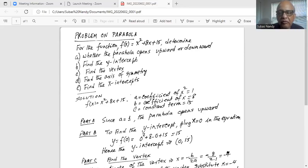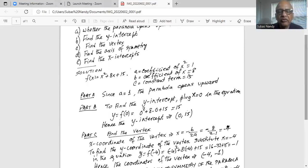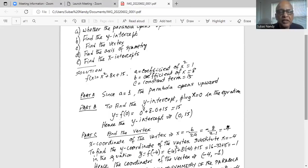Part C, find the vertex. The x-coordinate of the vertex is given by the formula minus B over 2A. In this case, B as we noted earlier is 8. So minus 8 divided by 2A is 1, 2 multiplied by 1. So it is minus 8 divided by 2 is minus 4. So that is the x-coordinate of the vertex.